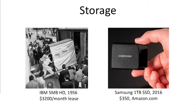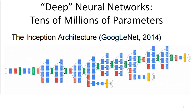A lot has changed to enable all this progress. Five megabytes in 1956 versus a terabyte in 2016, and there have been similar advances in processing power as well. And then we have these incredible neural network architectures with large numbers of parameters that can now be implemented on this hardware and can process images and provide classifications.